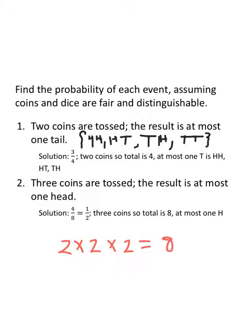At most one head. At most one head means zero heads or one head. If they're all three tails, that's one. Then the first coin is heads and the other two are tails, the second coin is heads and the other two are tails, the third coin is heads and the other two are tails. There's only four different ways that we can get at most one head. So four out of eight or half the time when tossing three coins, the result is at most one head.